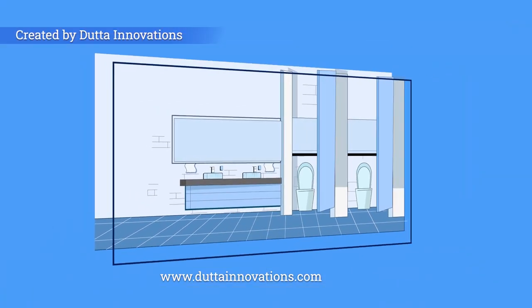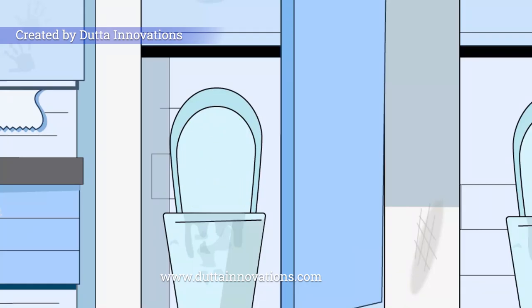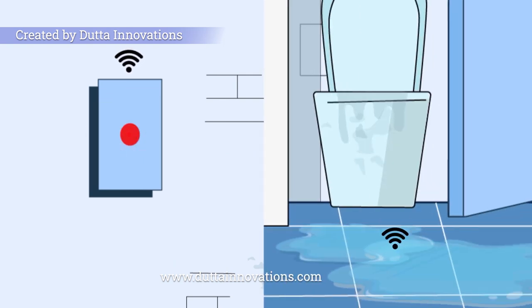This device converts the existing washroom into a smart washroom. It detects bad odor or smell using sensors and detects the condition of floor related to wetness or dryness.